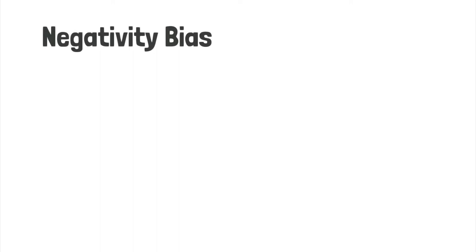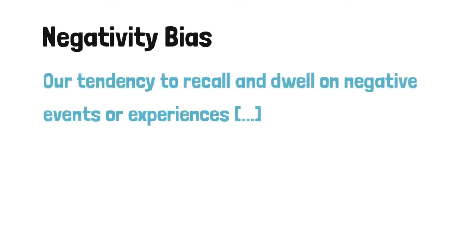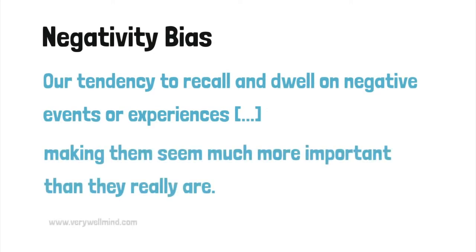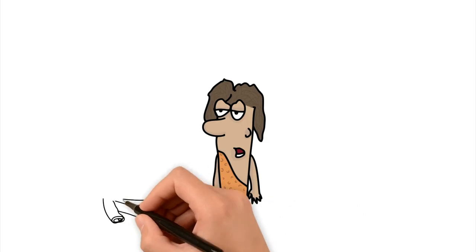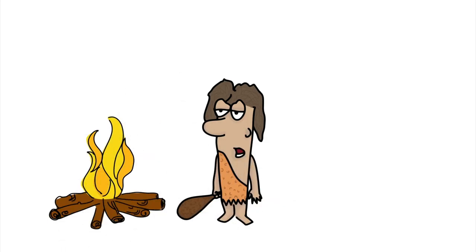There's this thing called the negativity bias. This is a survival mechanism from when we make mistakes, that those things stick in our mind so we don't make those mistakes again. So when we were living in caves, we might, if we touched the fire or something hot or something like that,